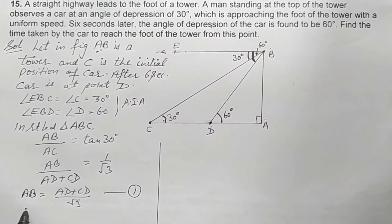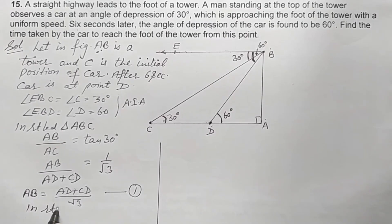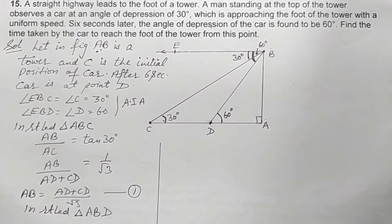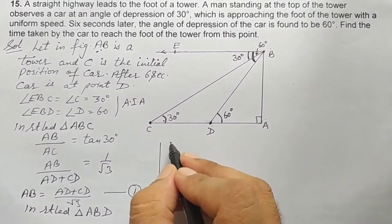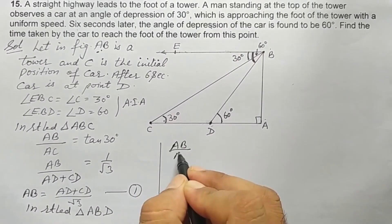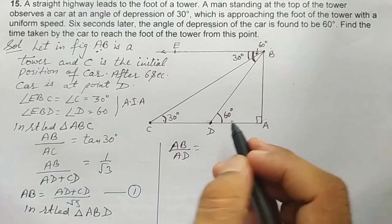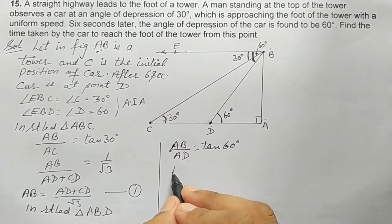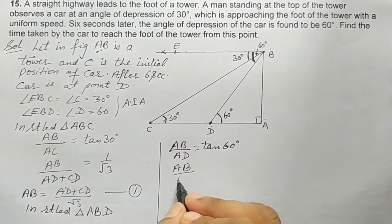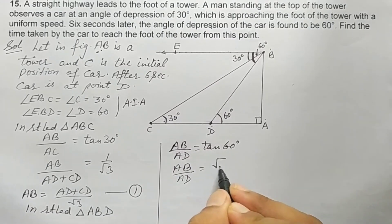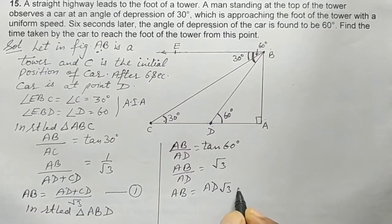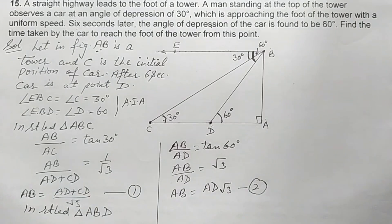Now in the second right angle triangle ABD, AB over AD is equal to tan 60 degrees. Tan 60 is root 3. So AB over AD equals root 3, which means AB equals AD times root 3. This is Equation 2. Both Equation 1 and Equation 2 express AB, so we can equate them.